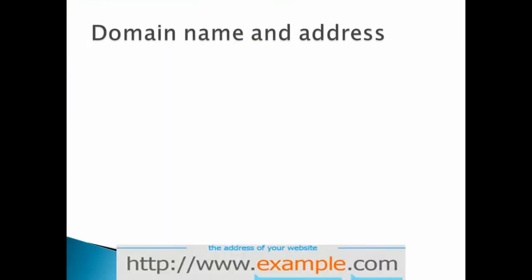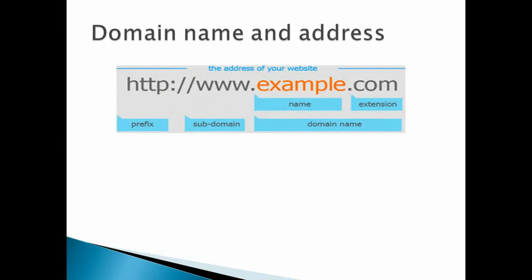Next: domain name and address. There is no central administration of the internet with millions of users. A domain name — for example, www.example.com — consists of HTTP as the prefix, www as the subdomain, the name (example), and the extension (.com). As a whole, the name and extension is the domain name. YouTube.com is also a domain name.